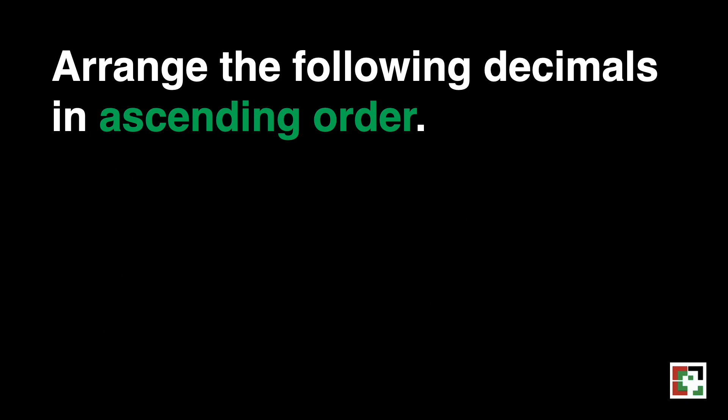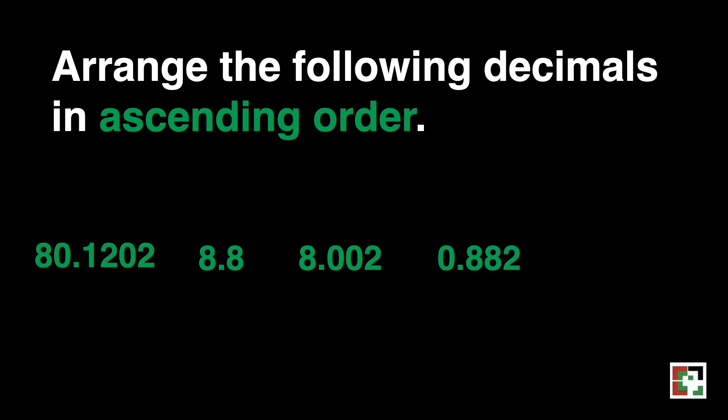This time, we'll make things more exciting — I'll be asking questions and you will answer. The first 3 persons who give the correct answer will win some prizes. We will arrange the following decimals in ascending order: 80 and 1,202 ten-thousandths, 8 and 8 tenths, 8 and 2 thousandths, 0.882 thousandths, and 8 and 120 ten-thousandths. We will give you one minute to write the answer. Good luck!